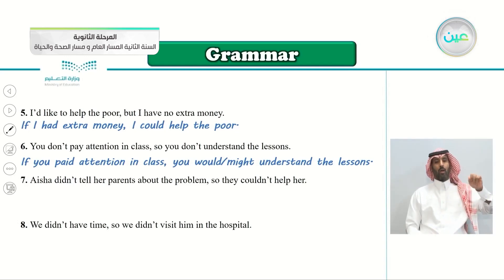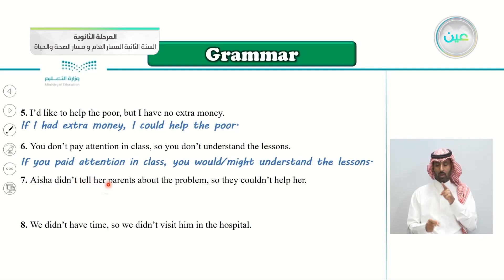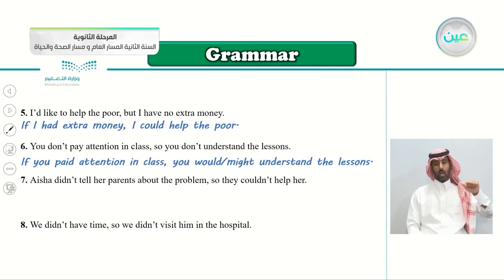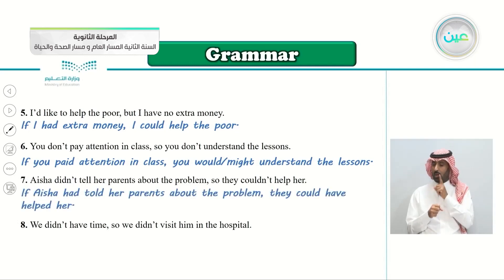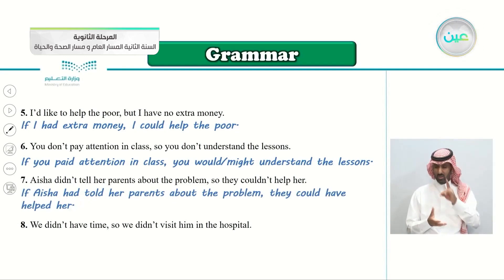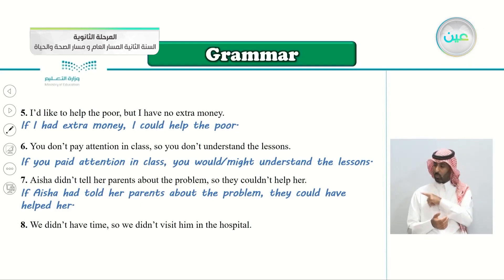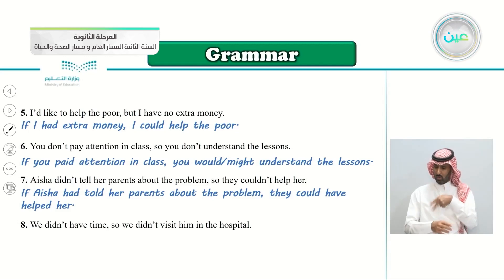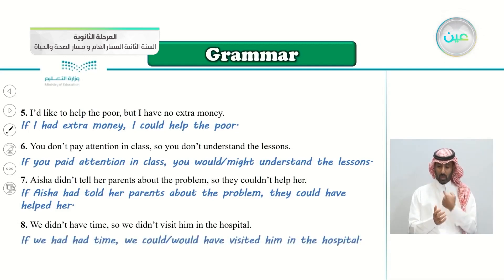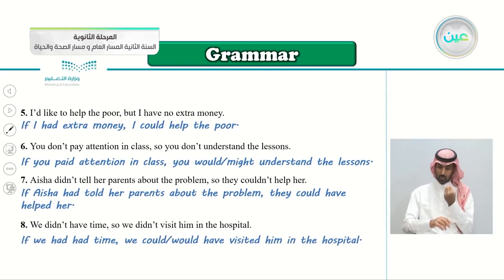Number five: 'I'd like to help the poor, but I have no extra money.' Answer: 'If I had extra money, I could help the poor.' Number six: 'You don't pay attention in class, so you don't understand the lessons.' Answer: 'If you paid attention in class, you would or might understand the lessons.' Number seven: 'Aisha didn't tell her parents about the problem, so they couldn't help her.' Answer: 'If Aisha had told her parents about the problem, they could have helped her.' Number eight: 'We didn't have time, so we didn't visit him in the hospital.' Answer: 'If we had had time, we could have visited him in the hospital.'